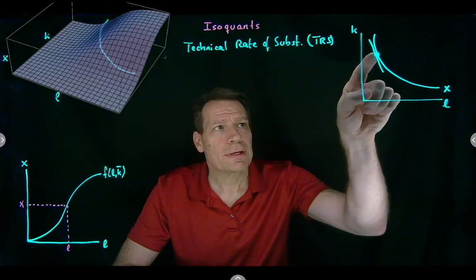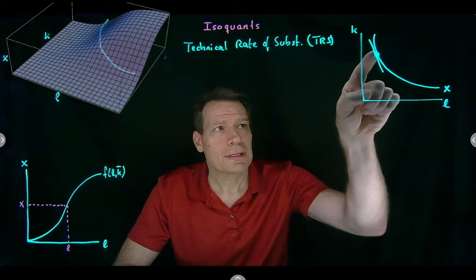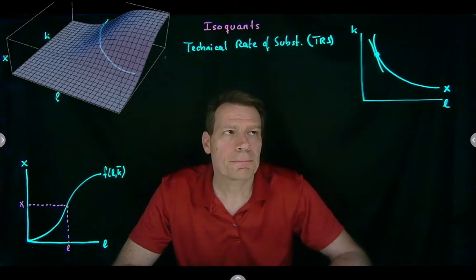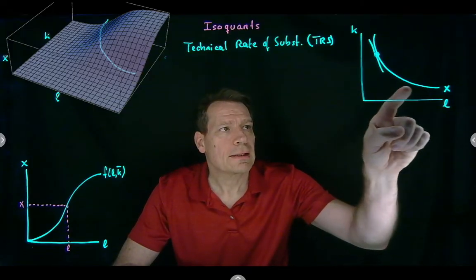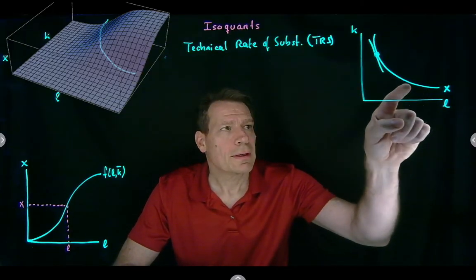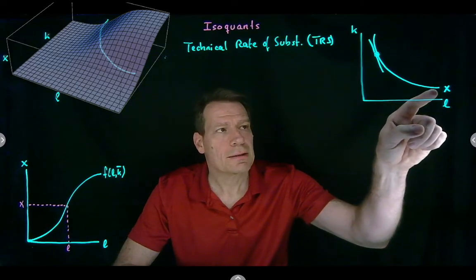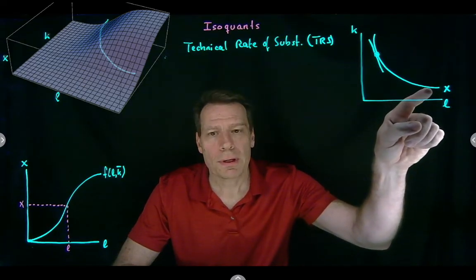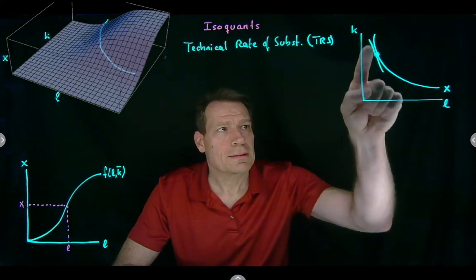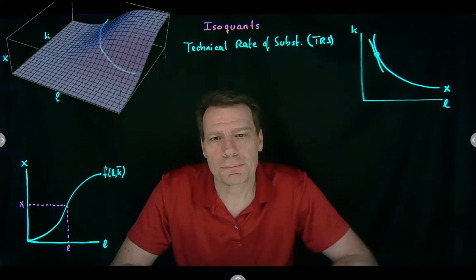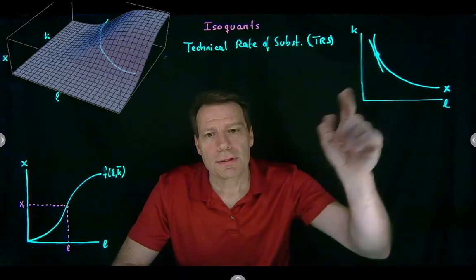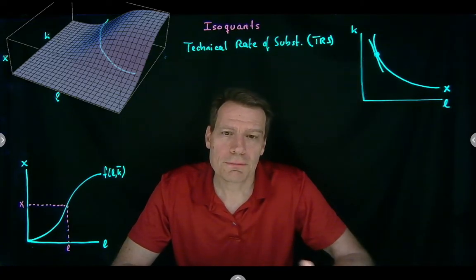So the slope here tells us: if we hire one more worker, how much capital can we let go of and still produce exactly the same level of output? That's the first feature that's similar to indifference curves.